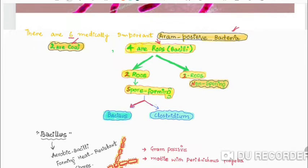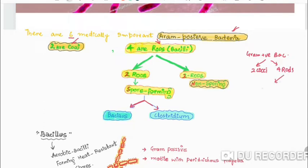There is one bacteria which is called Clostridium. The 2 cocci we have studied are Streptococcus and Staphylococcus. The 4 rods include spore forming and non-spore forming rods. The spore forming rods we will study are Bacillus anthrax and Clostridium.